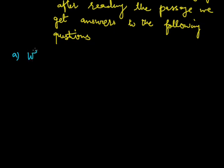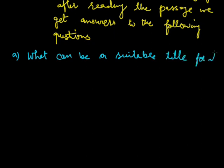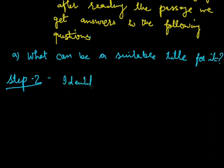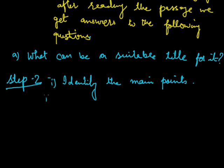One question we get answered is: what can be a suitable title for this passage? Step number 2 is to identify the main points. You should identify the main points. Don't be afraid if there are sections from where you don't find notes — you can make notes from another section or paragraph, taking another idea.